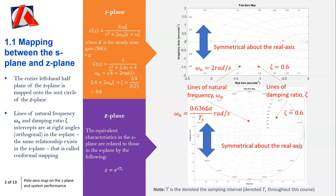In terms of the mapping between the s-plane and the z-plane: the s-plane maps onto what is known as the unit circle on the z-plane. You can see this circle here — it is known as the unit circle because the modulus of its radius is 1. Looking at the axes, you have values from minus 1 to 1 on the real axis and minus 1 to 1 on the imaginary axis.